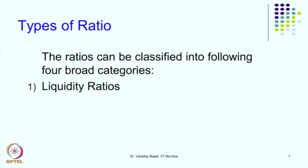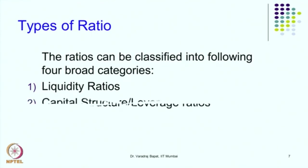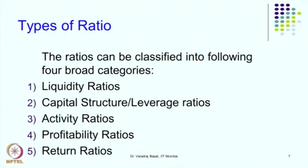Ratios can be classified in a variety of ways. Hundreds of ratios can be calculated for different purposes, but here we are going to discuss mainly the ratios calculated from financial statements. The first category is liquidity ratios. As the name suggests, this is about the availability of cash or liquid money with the company. We will calculate certain ratios wherein we can comment on liquidity. Then we have capital structure, leverage, activity, profitability, return and so on.